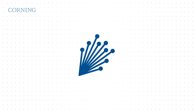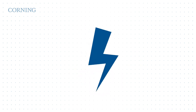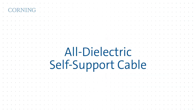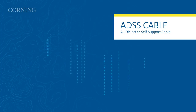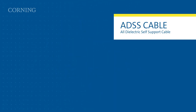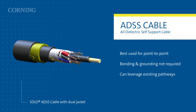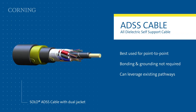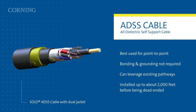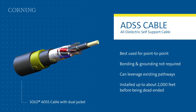The power industry has traditionally defaulted to the tried-and-true method of deploying all-dielectric self-support cable, also known as ADSS. ADSS is great for many things, especially point-to-point fiber connections with relatively infrequent need to access fiber along the route. ADSS doesn't require bonding and grounding, can leverage existing pathways on pole runs and transmission towers so new poles aren't required, and can be installed across long spans before being dead-ended.